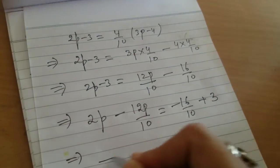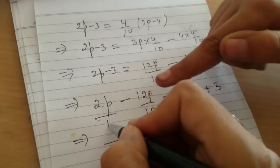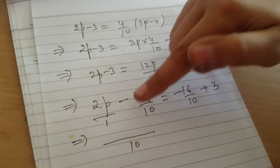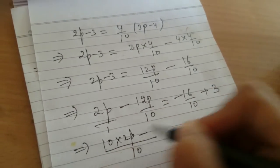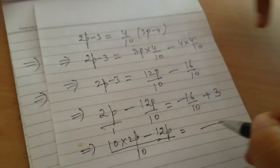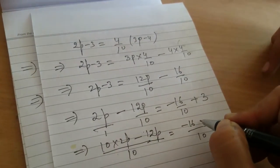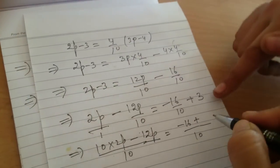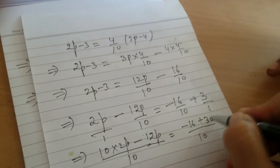This implies, now what will you do? We will take a LCM. Then we will imagine that here is 1, so we will multiply 10 by 2, that is 20. 10 into 2p minus 12p is equal to, here also you will do the same. Then we will, minus 16 plus, we will imagine that here is 1 also, so here is 30.